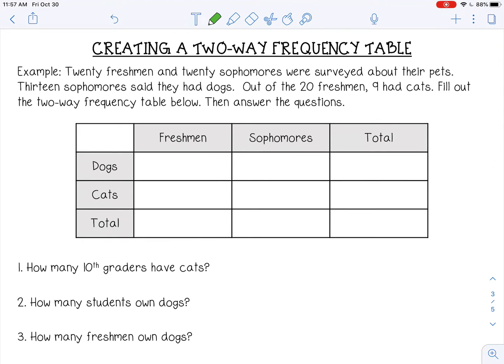20 freshmen and 20 sophomores were surveyed about their pets. 13 sophomores said they had dogs. Out of the 20 freshmen, nine had cats. Fill out the two-way frequency table below and then answer the questions. We know there are 20 freshmen and 20 sophomores, which means 40 total. 13 sophomores had dogs, which means there's seven left over for cats. Out of the 20 freshmen, nine had cats, which means there were 11 that liked dogs. Let's add across. The total number that liked dogs were 24. The total number that liked cats were 16. Make sure that these add to give you 40.